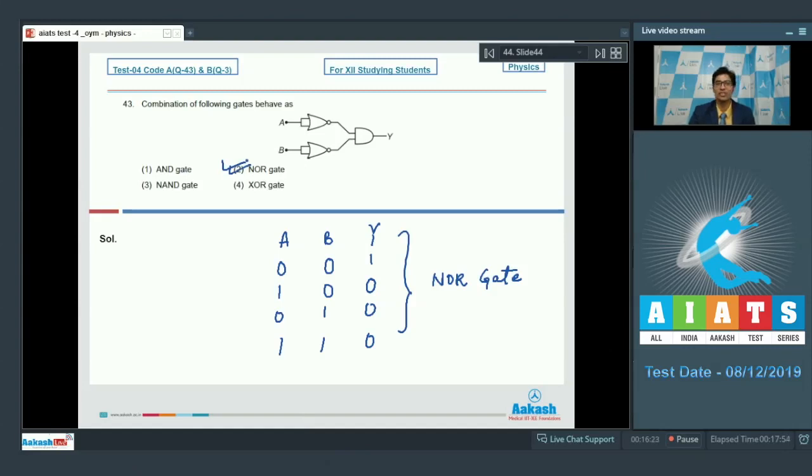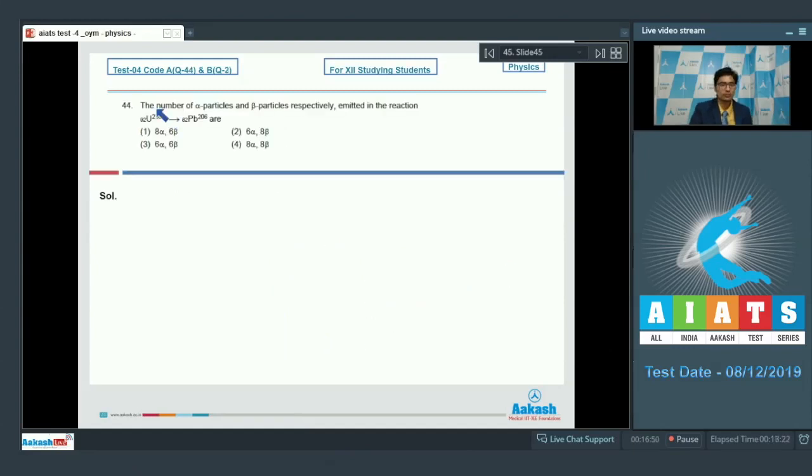Let us proceed to question number 44. Question number 44 says the number of alpha particles and beta particles respectively emitted in the reaction 92 U238 gives 82 Pb 206 R.